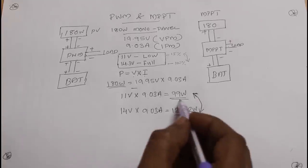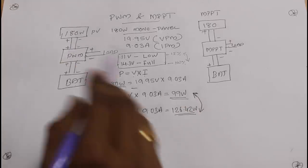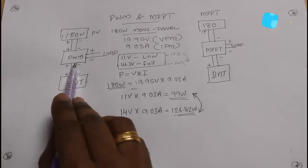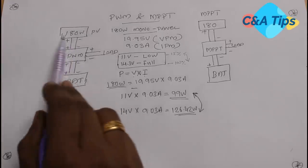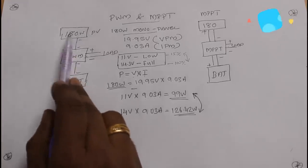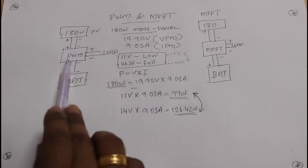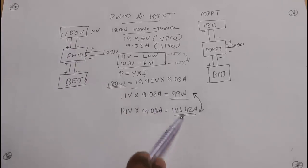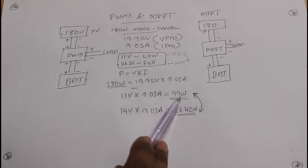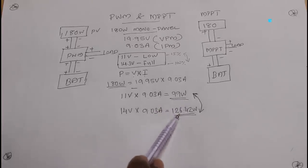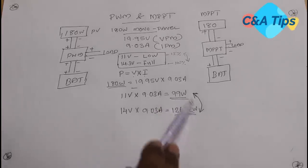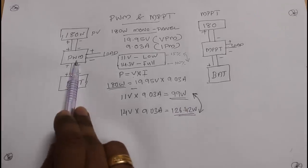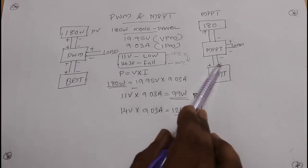This PWM charging controller achieves about 90 watts. That is the same issue with MPPT — the difference in output is significant. This is the key comparison between PWM and MPPT.